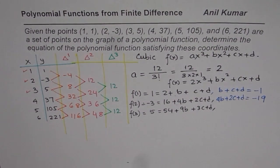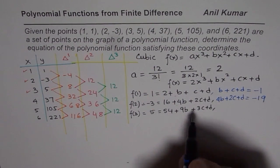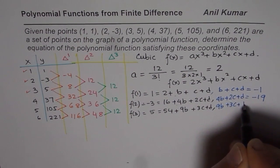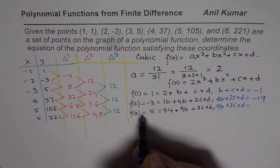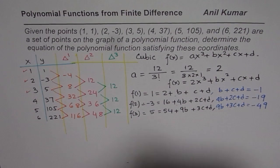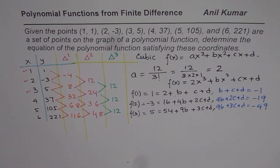So writing it in a different color, rearranging, 9b + 3c + d equals, taking 54 to this side, -54 + 5 means -49. So we get -49.